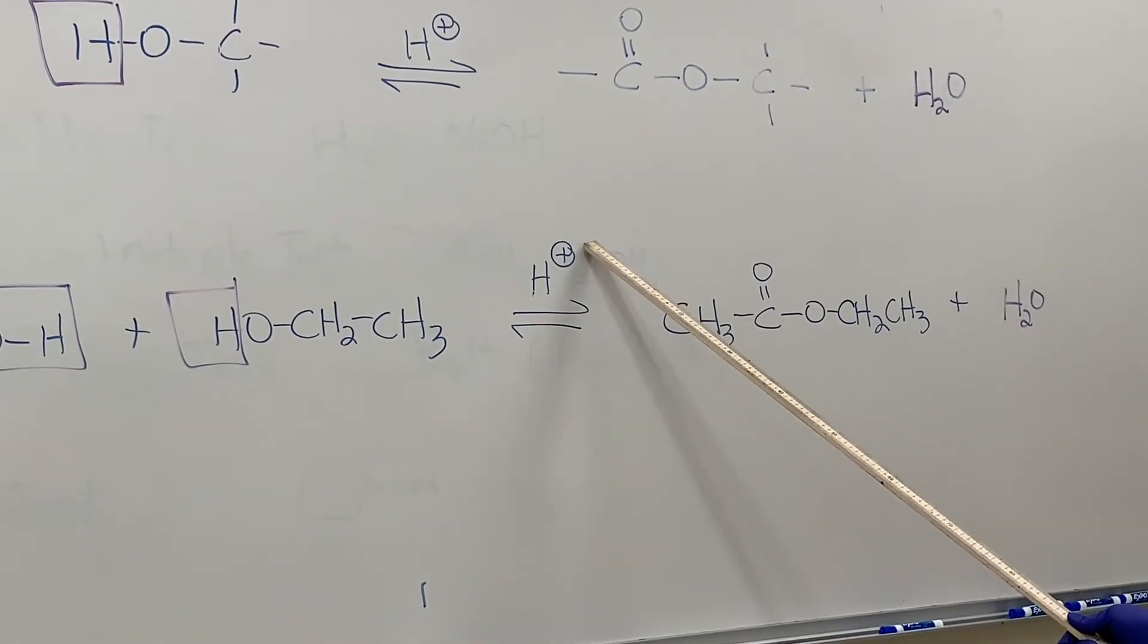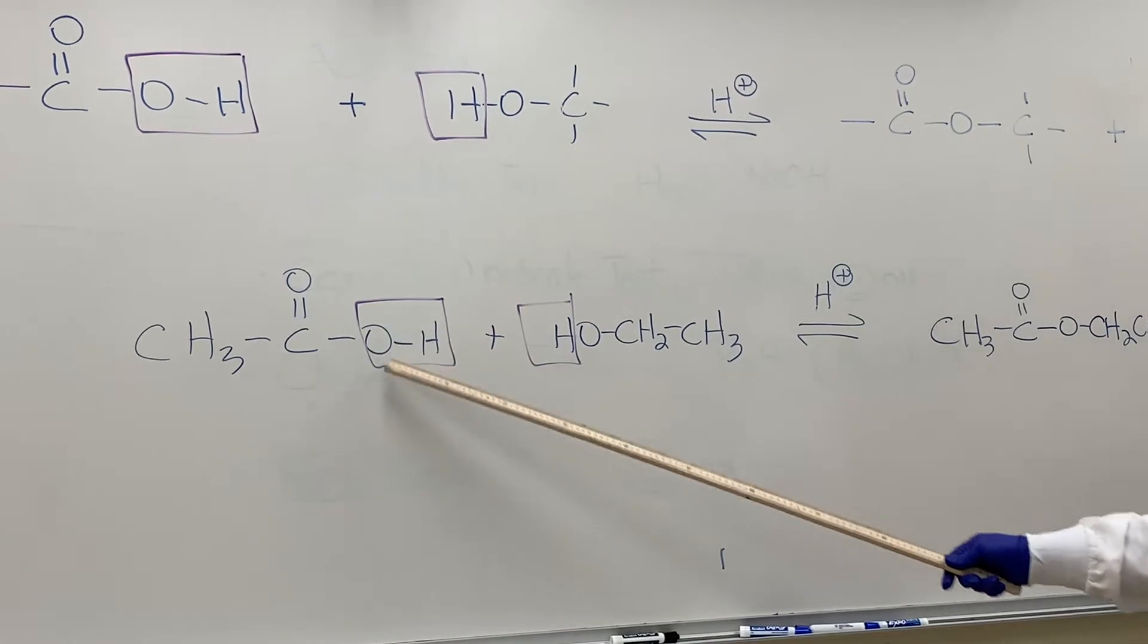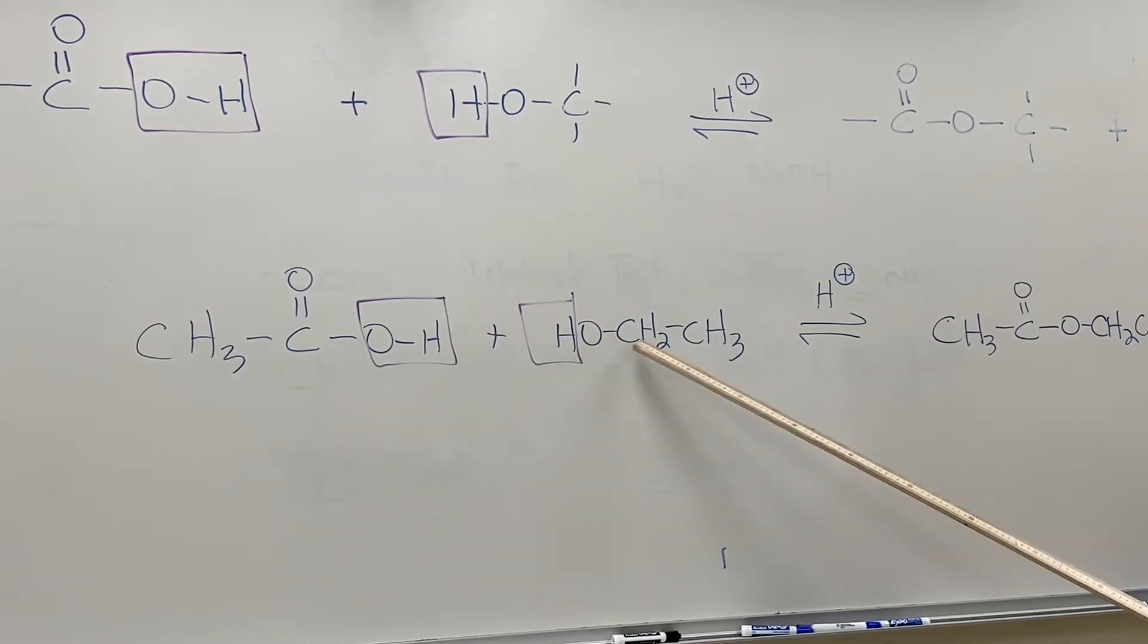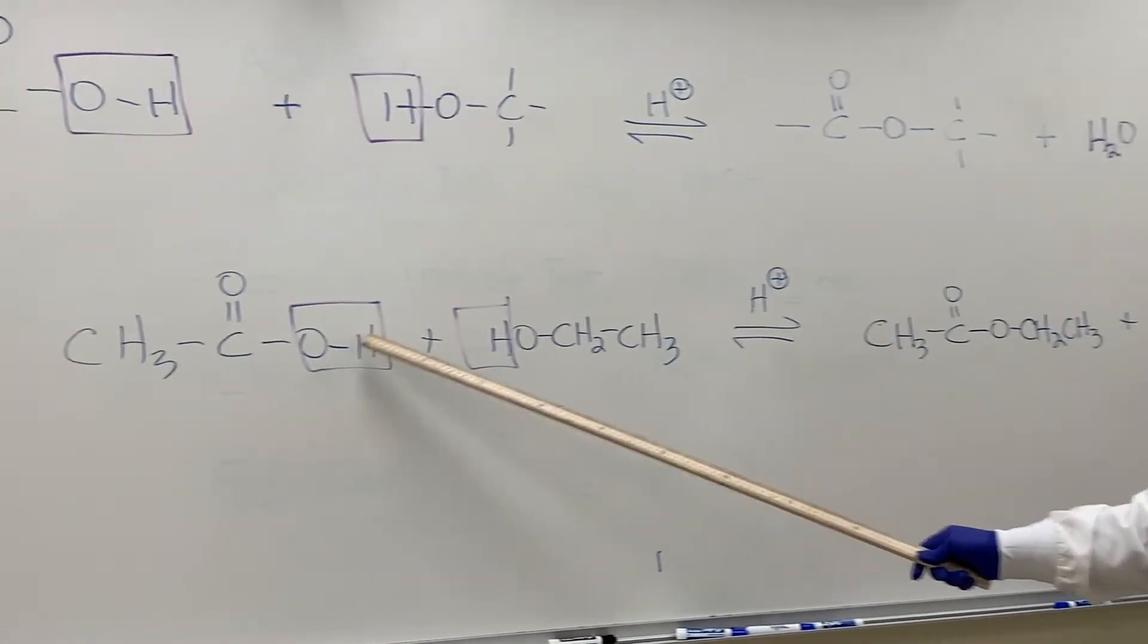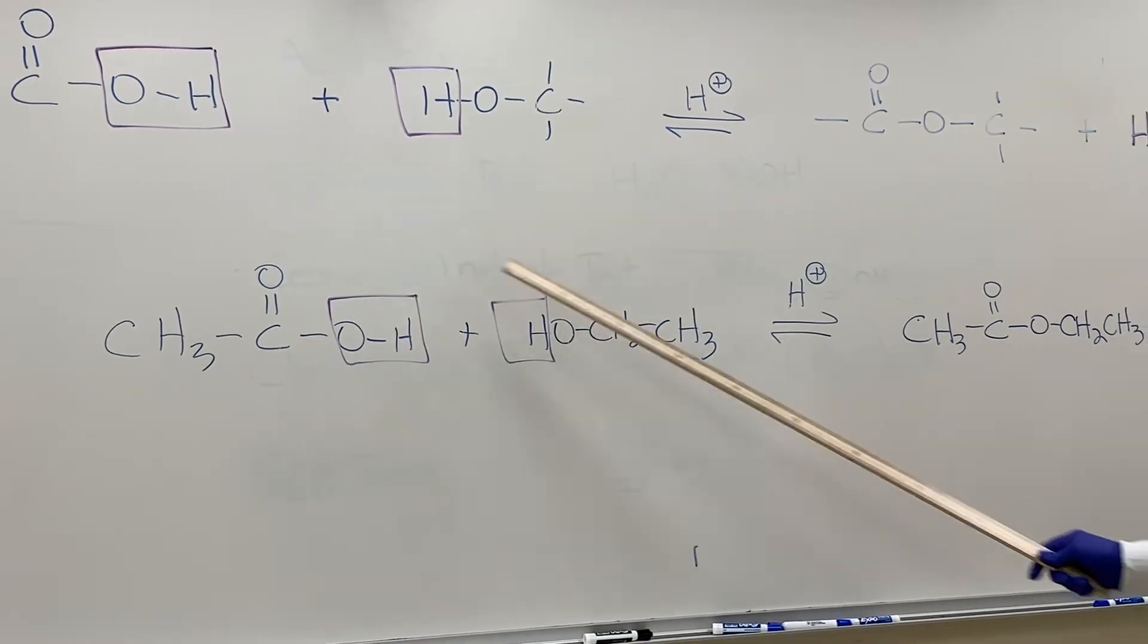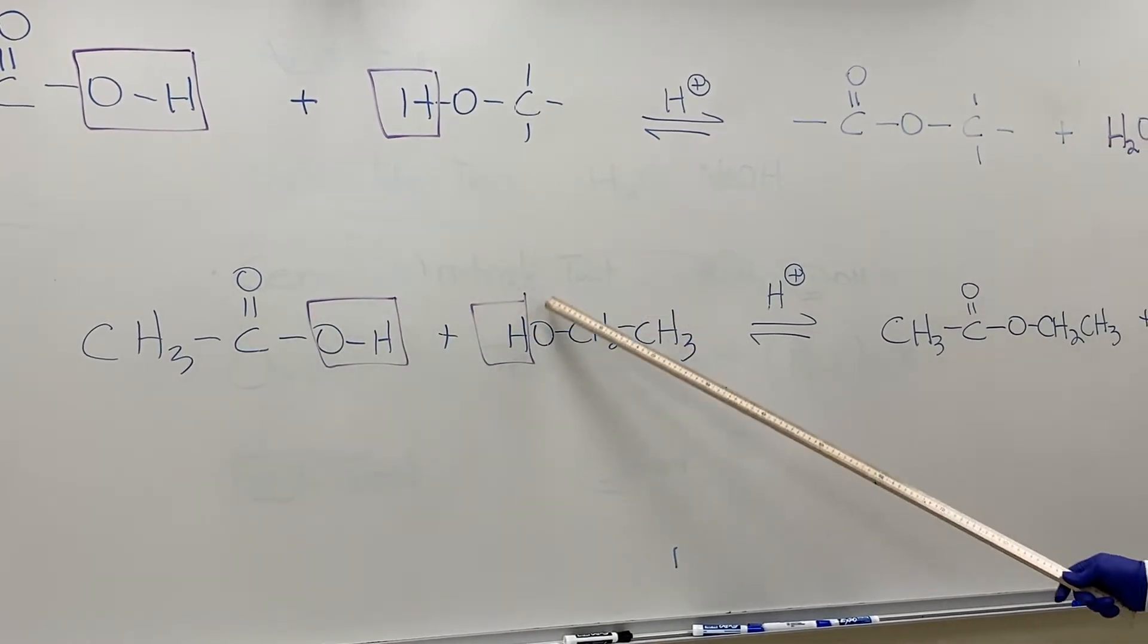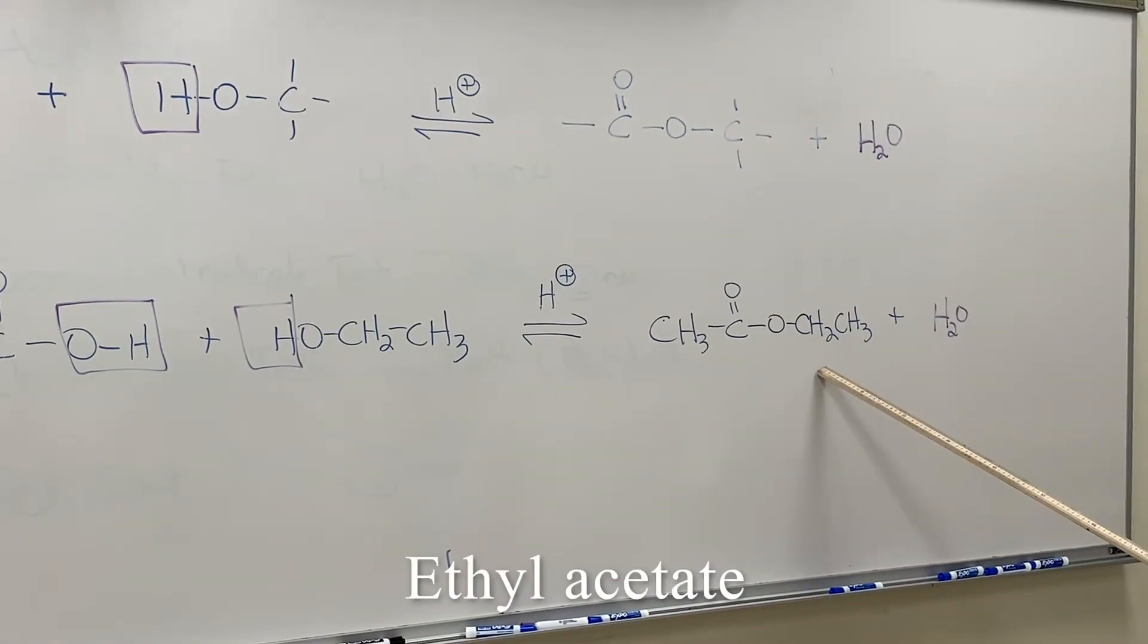So notice I'm going to take the OH off the carboxyl group, the H off the alcohol. This is where we're forming our water over here. And then wherever I remove the atoms or groups of atoms, this is where what I have left I have to join together. So the carbonyl carbon has to bond to this oxygen to form this ester. This particular ester is called ethyl acetate or some people call it ethyl ethanoate. This ethyl acetate is commonly found in fingernail polish. I think everyone has smelled that characteristic odor before.